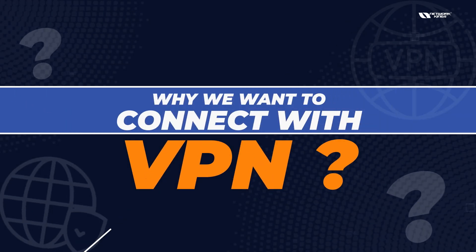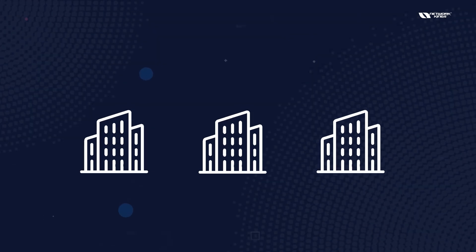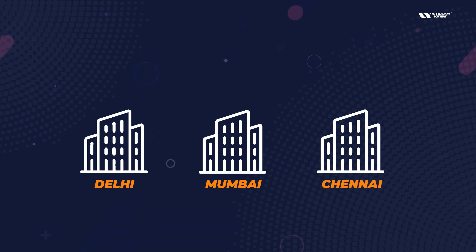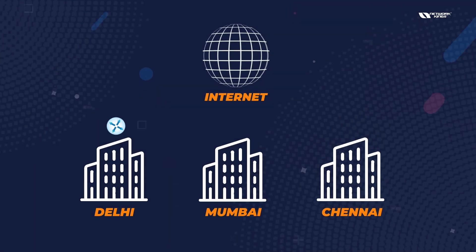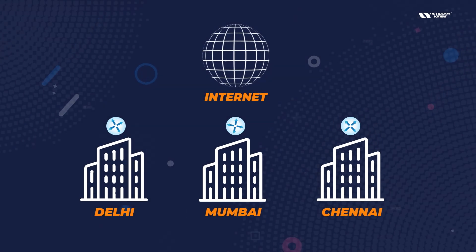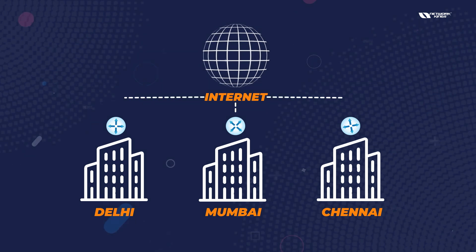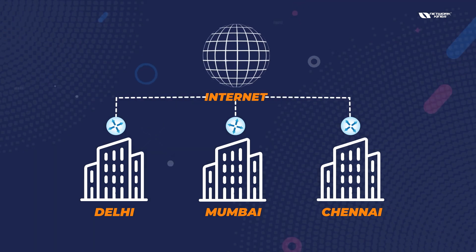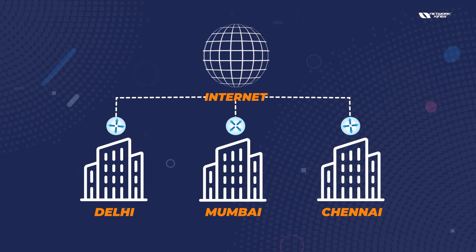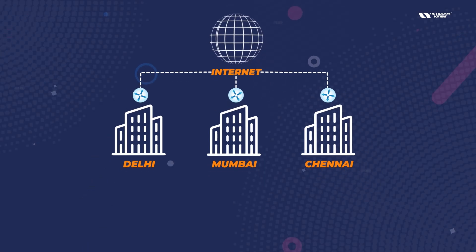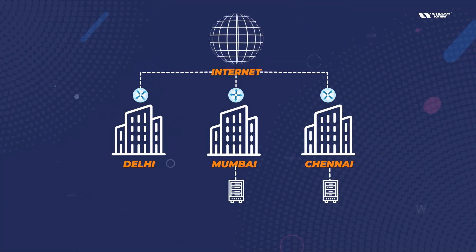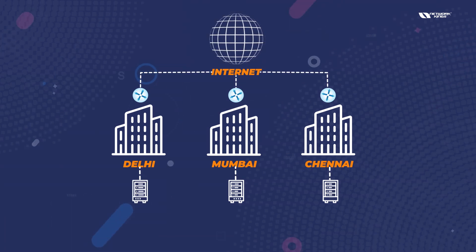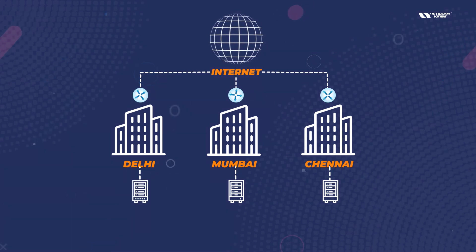Why we want to connect with VPN: I have three branches — this is my Delhi office, this is Mumbai, and this is Chennai. Over the internet, I will use normal routers that support VPN. I'm going to connect all my offices over the internet using VPN. Maybe in Mumbai we have a server, in Chennai we have another server, and in Delhi we have a Tally server — different servers at different locations.